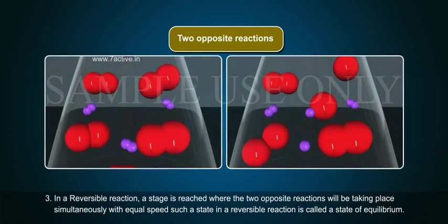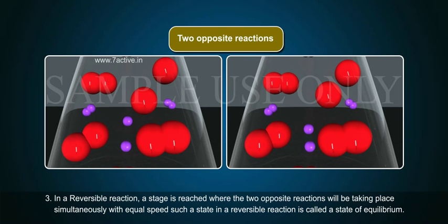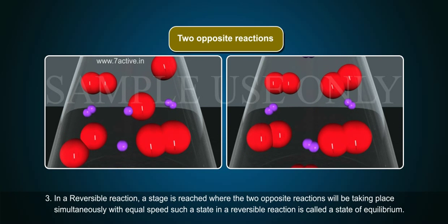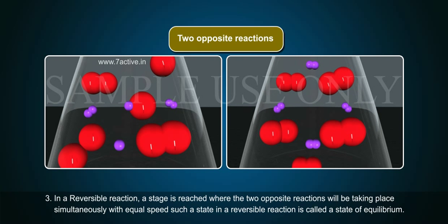In a reversible reaction, a stage is reached where the two opposite reactions will be taking place simultaneously with equal speed.